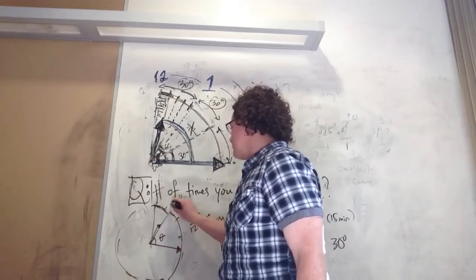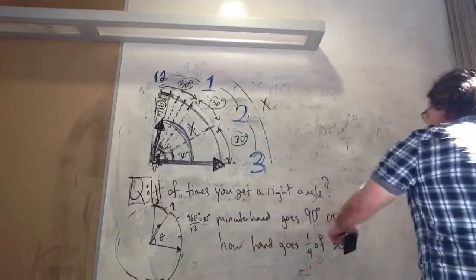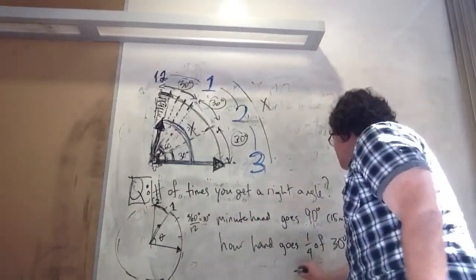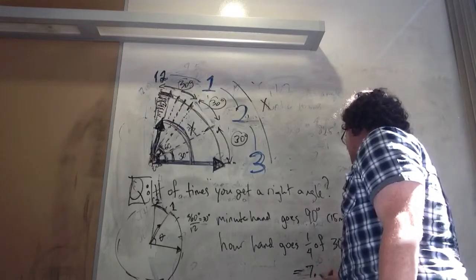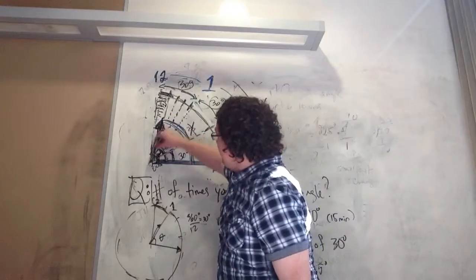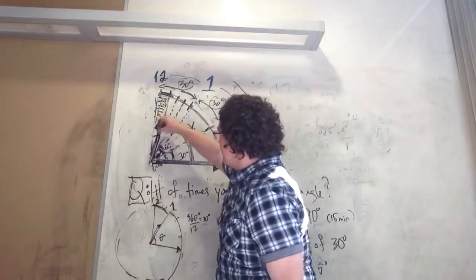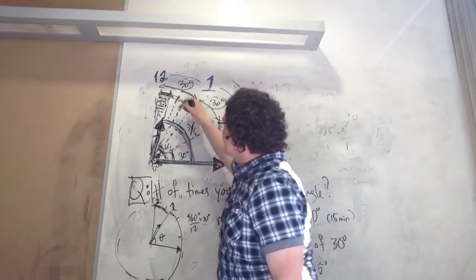So this distance from 12 to 1 on the clock is 30. If we go a fourth of that distance, a pocket calculator will tell you that's 7.5 degrees. So the angle between these is not 7.5, it's not 90.